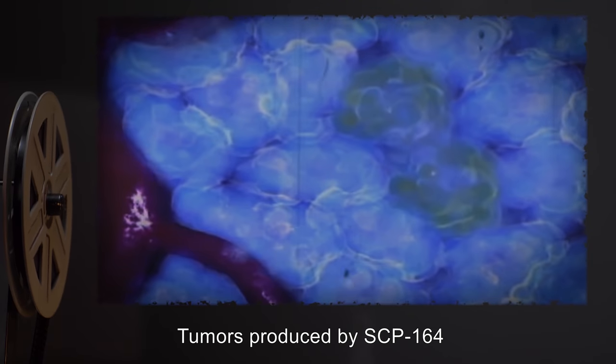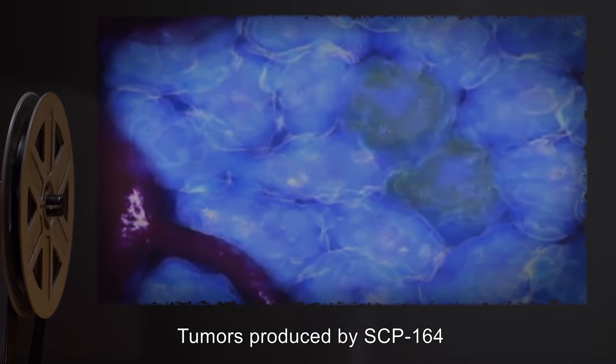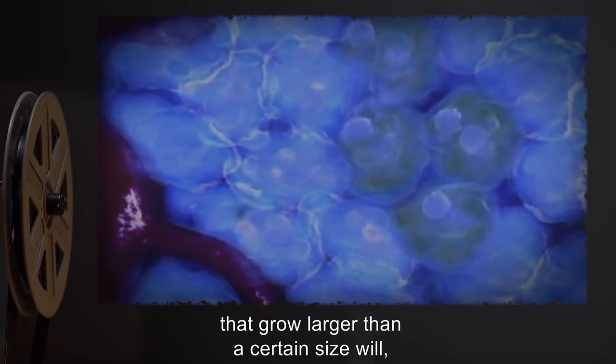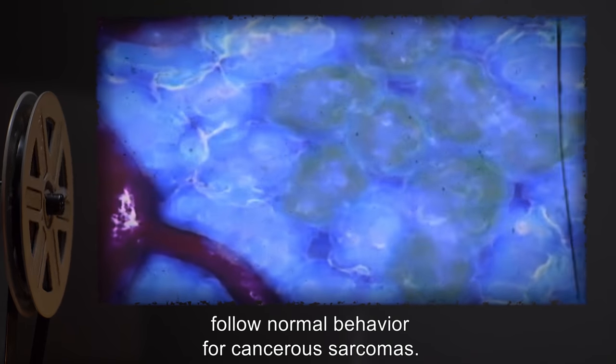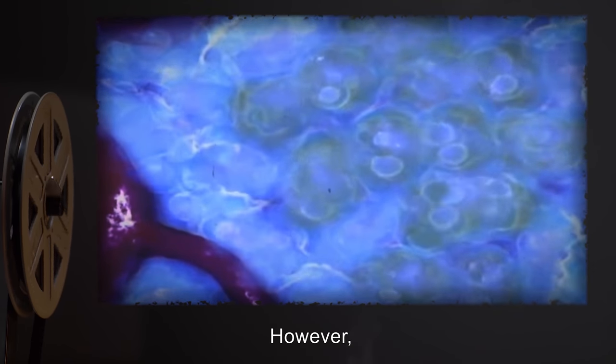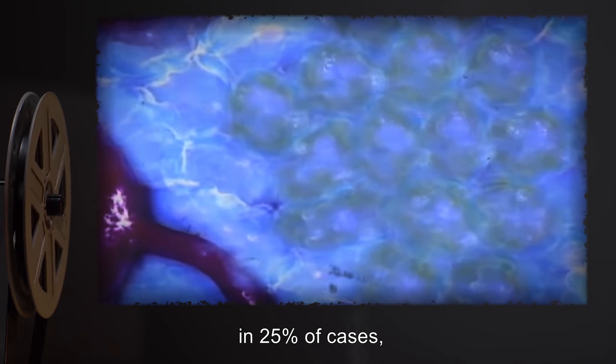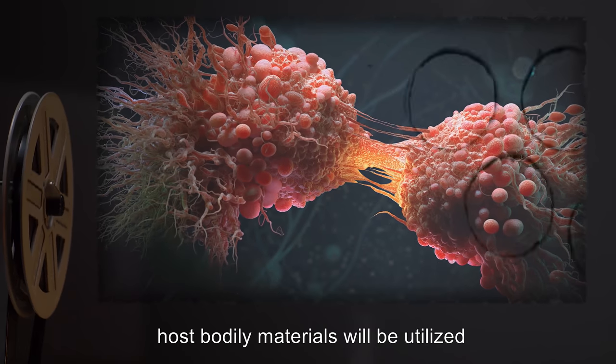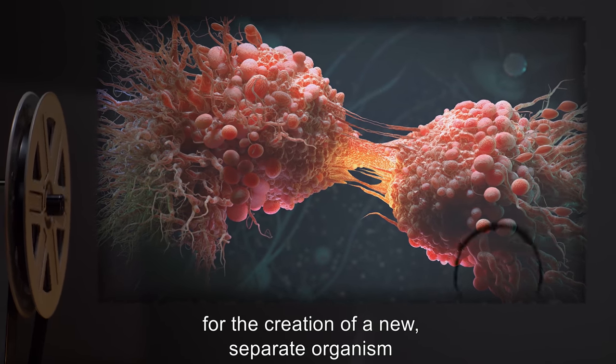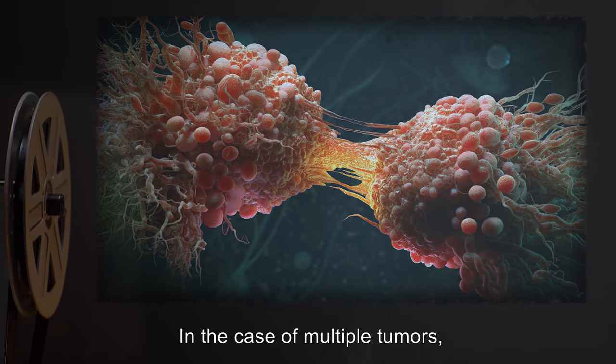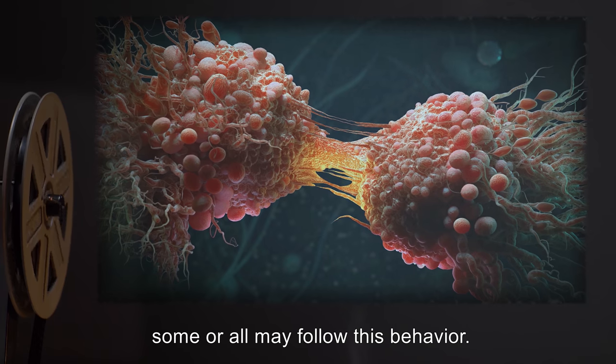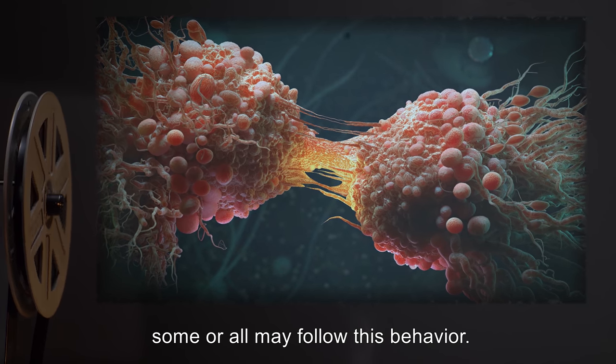Tumors produced by SCP-164 that grow larger than a certain size will, in 75% of cases, follow normal behavior for cancerous sarcomas. However, in 25% of cases, host bodily materials will be utilized for the creation of a new separate organism inside the tumor. In the case of multiple tumors, some or all may follow this behavior.